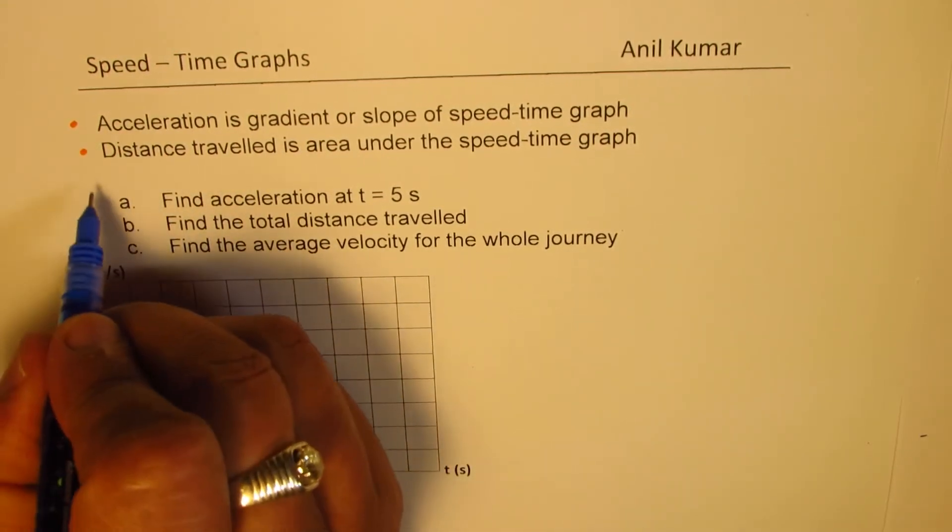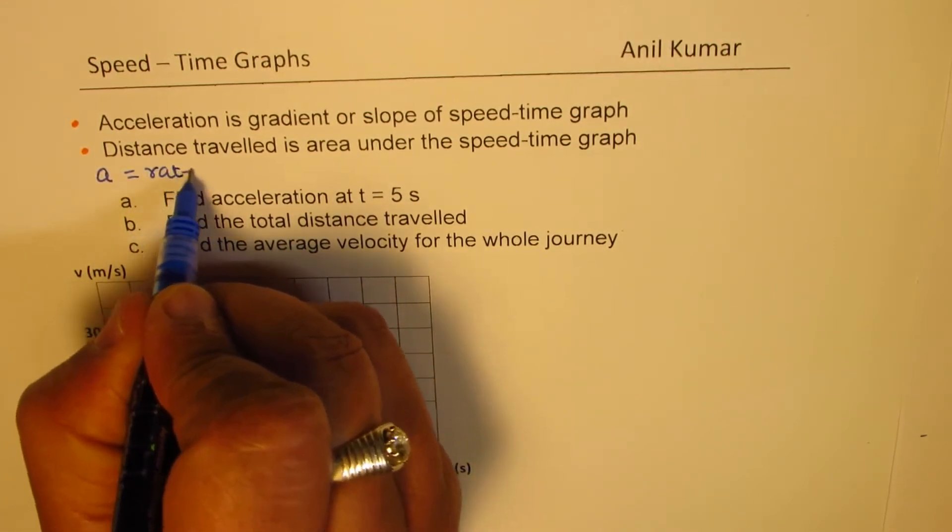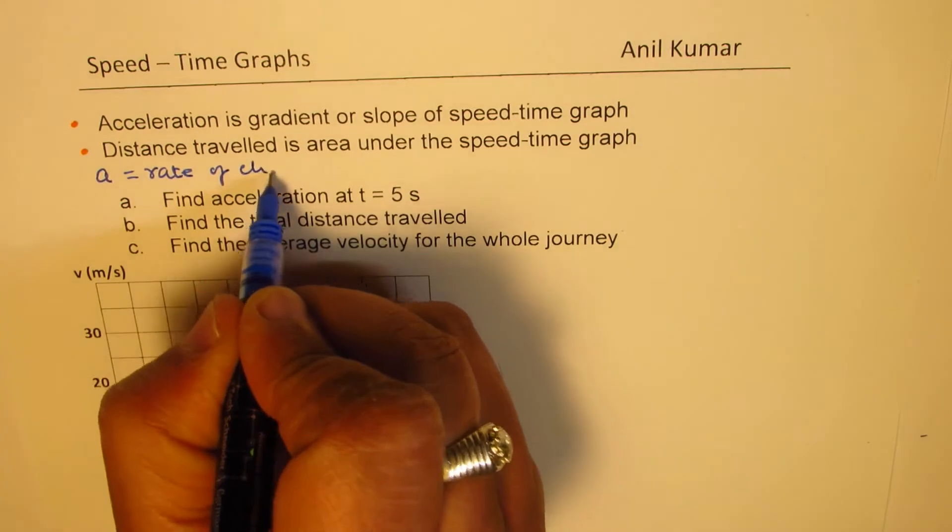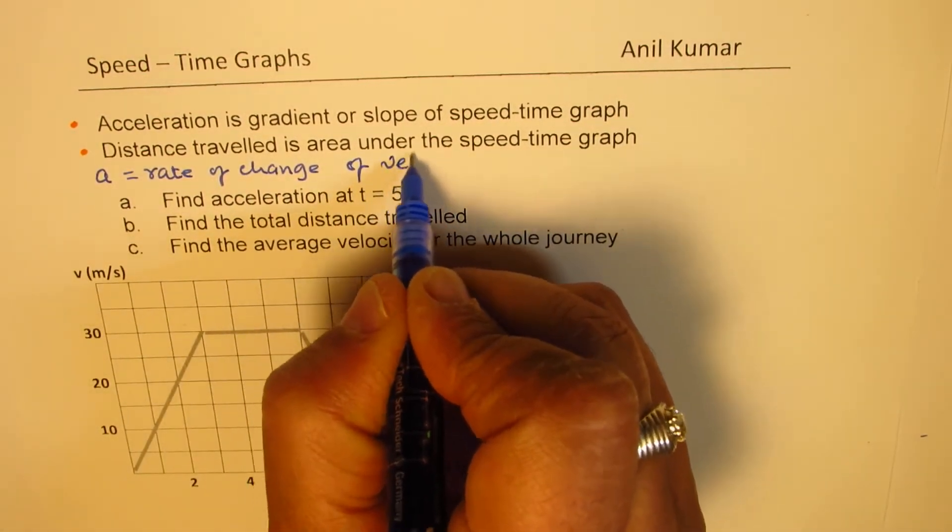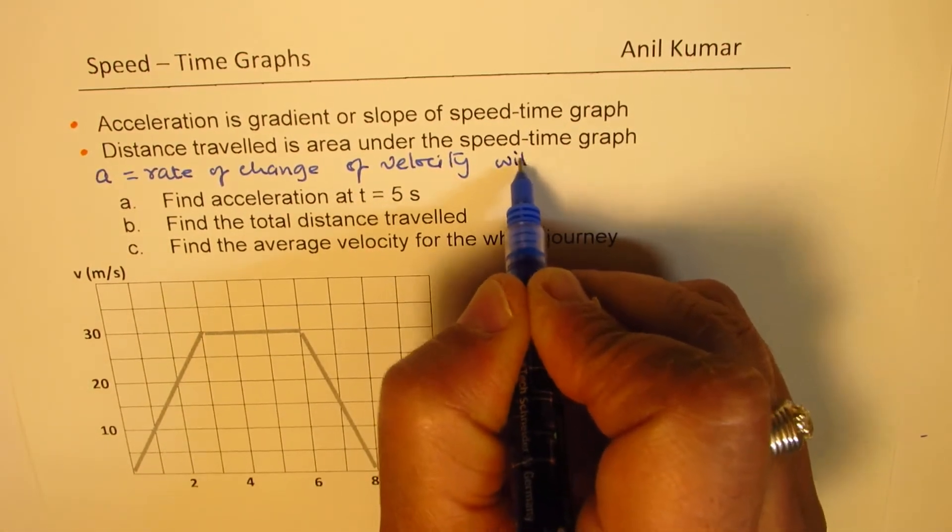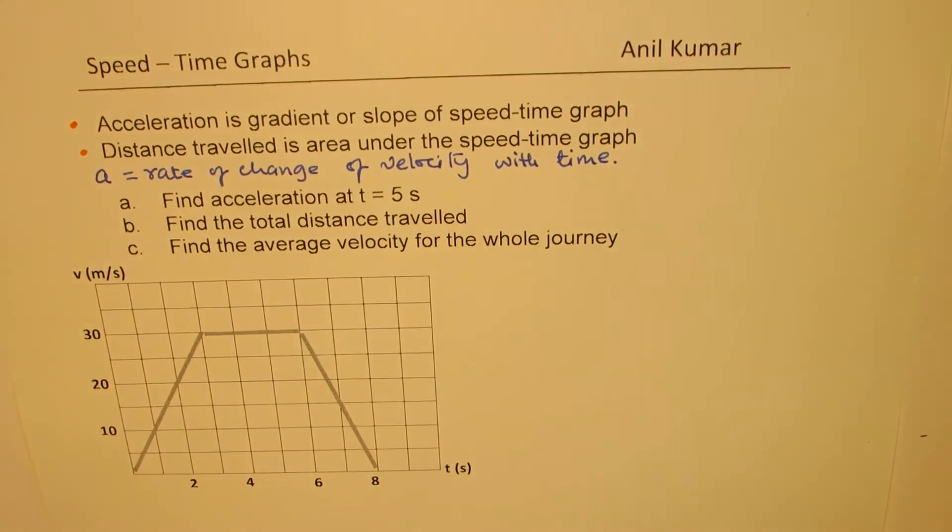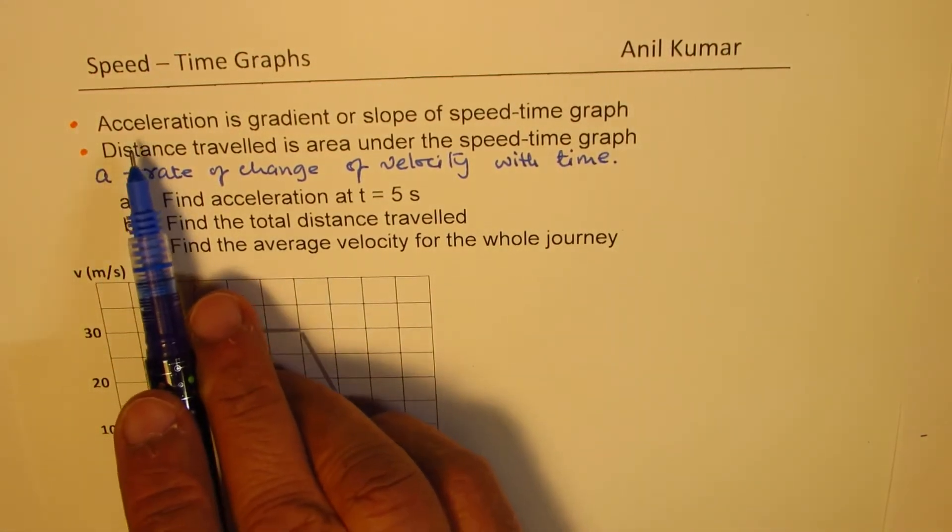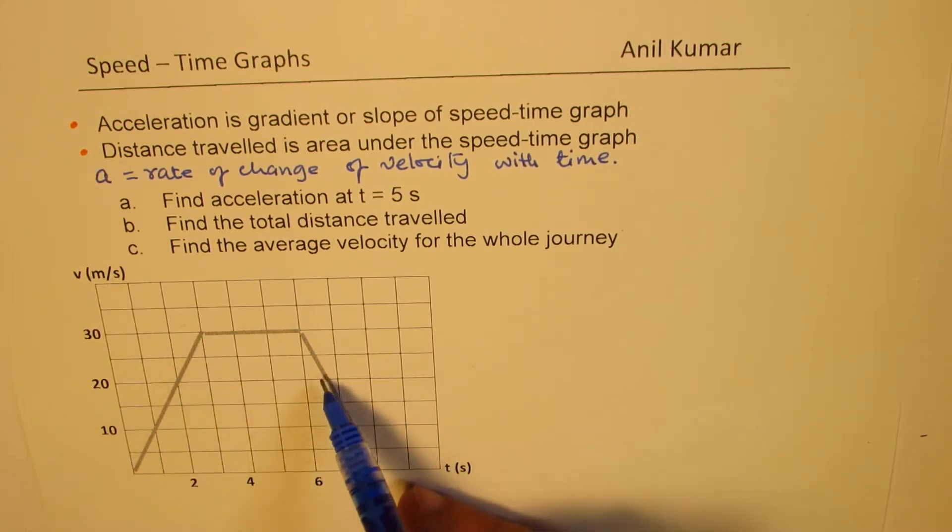So we could also write acceleration a as equal to rate of change of velocity with time. So that is kind of important to understand. And acceleration can be positive or negative. For example, here we have a slope which is going upwards, it will be positive, on this side will be negative. It could be zero also.